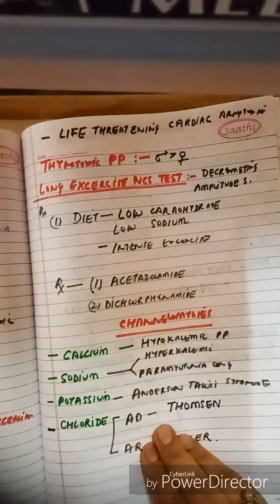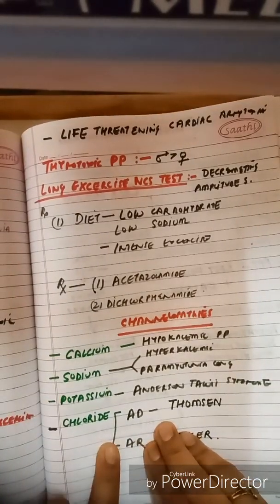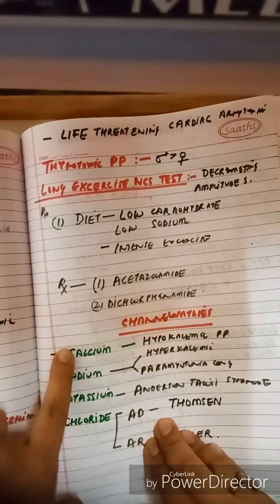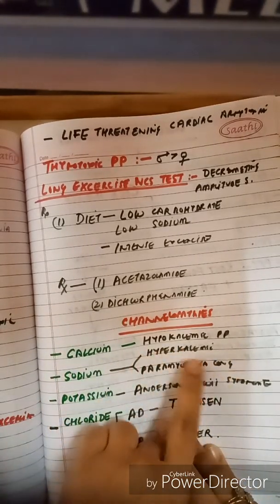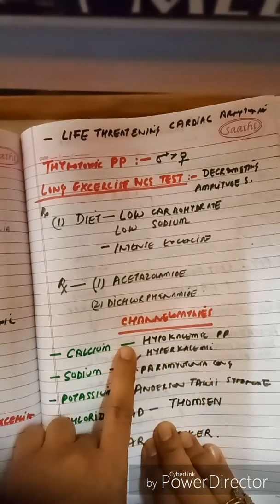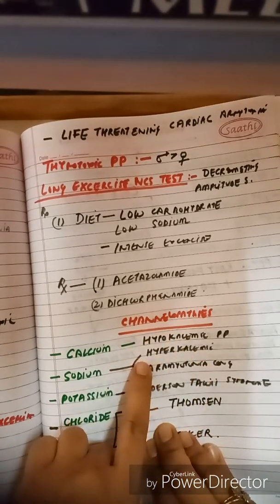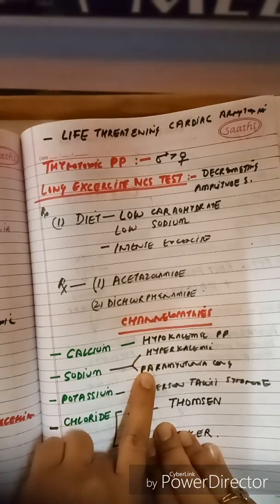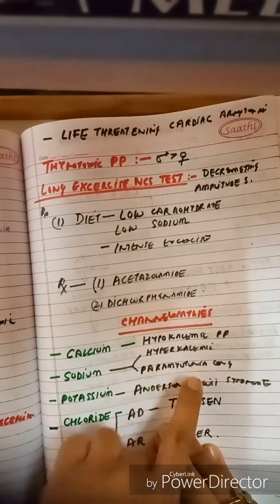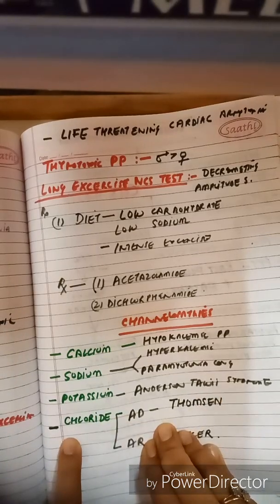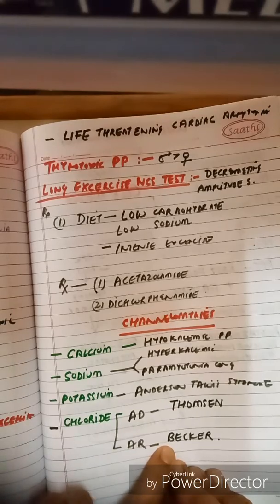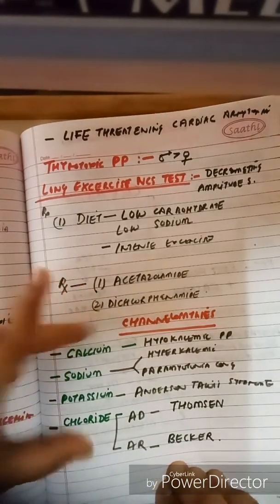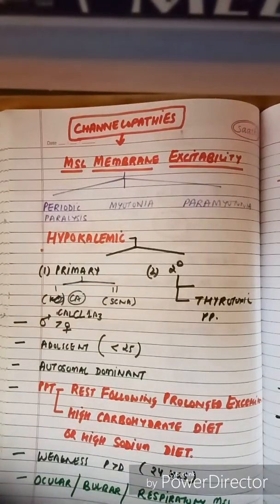Looking at the classification: there are four channels. First, the calcium channel — related to it we have hypokalemic periodic paralysis. In sodium, we have hyperkalemic periodic paralysis and paramyotonia congenita. In potassium, we have Andersen-Tawil syndrome. In chloride, we have two channelopathies: one is Thompson's and the other is Becker's.